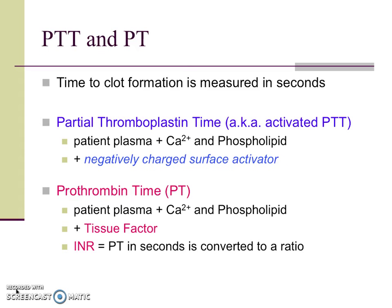In the prothrombin time or PT test shown in pink on this slide, we add back calcium and phospholipid to the patient's plasma again, but this time we add tissue factor to the sample instead. This forces coagulation in the test cuvette to proceed down the extrinsic pathway by directly activating the patient's factor VII. The time to convert liquid plasma to solid plasma is measured in seconds and is reported as the prothrombin time or PT. The PT in seconds is also converted to a ratio called the INR, or international normalization ratio. The PT and INR results are always reported together. A normal PT and INR result means a normal extrinsic pathway, and that means normal factor VII level and function.